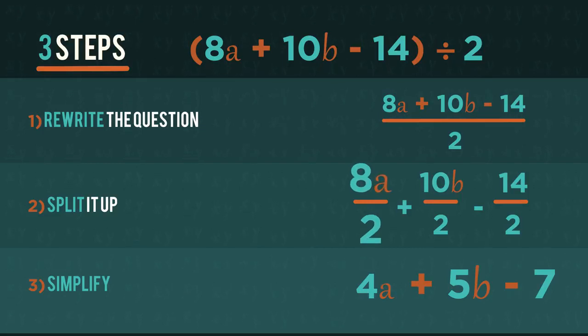So 8a divided by 2 is 4a, 10b divided by 2 is 5b, and 14 divided by 2 is 7. Simple.